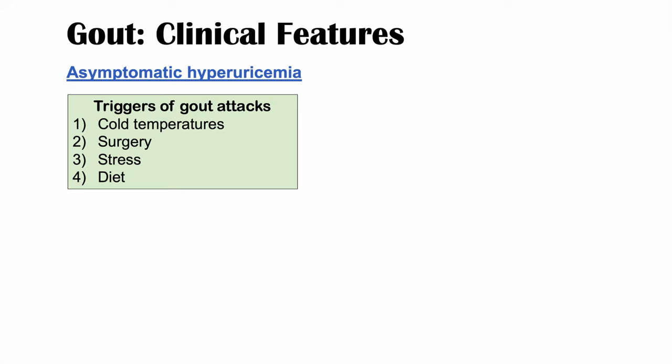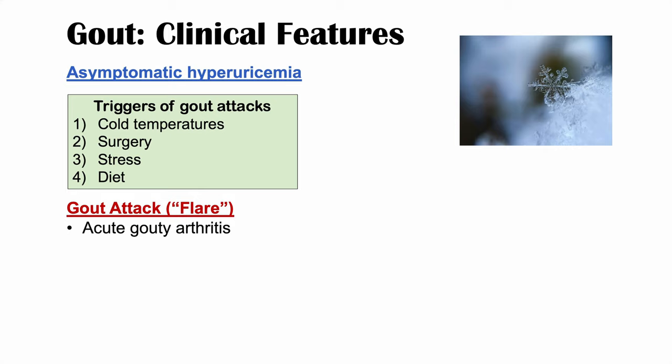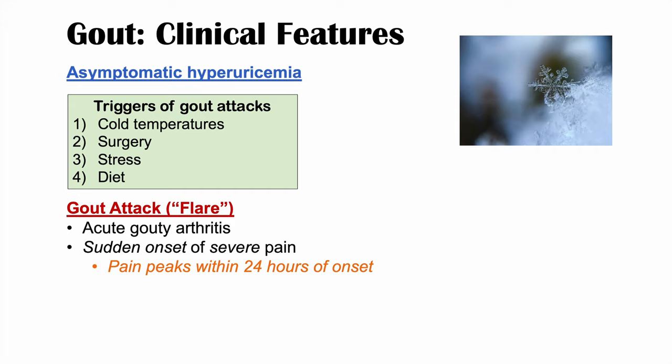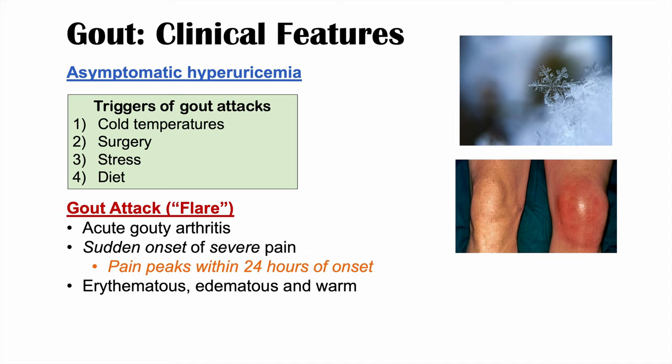A gout attack or flare is called acute gouty arthritis. This is the monoarticular arthropathy occurring with a sudden onset of severe pain — sudden and severe are the key words. It can wake patients up in the middle of the night, and the pain can progress and peak within 24 hours of onset. Unlike typical osteoarthritis with an insidious presentation, this is very sudden and severe. The affected joint appears erythematous, edematous, warm, and tender to touch — red, swollen, hot, and tender.